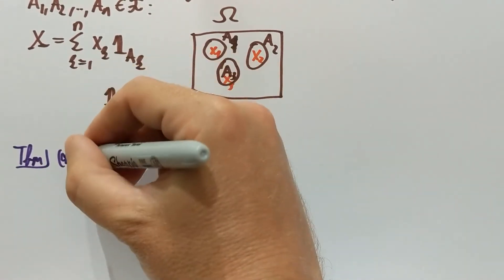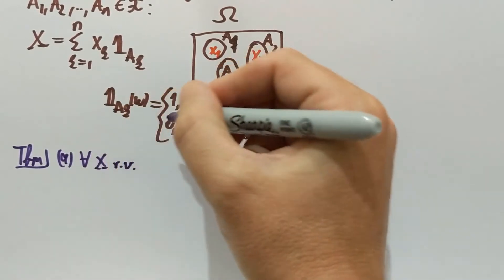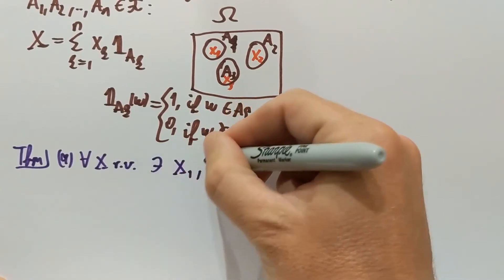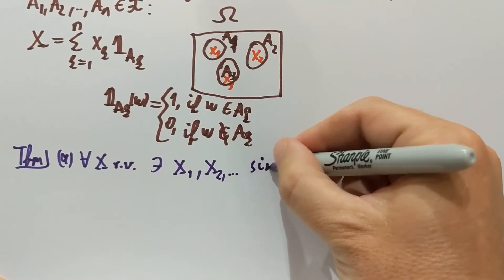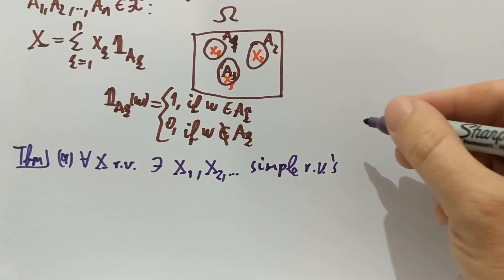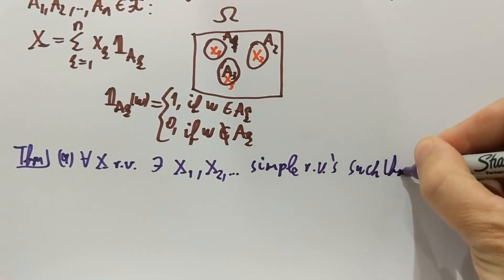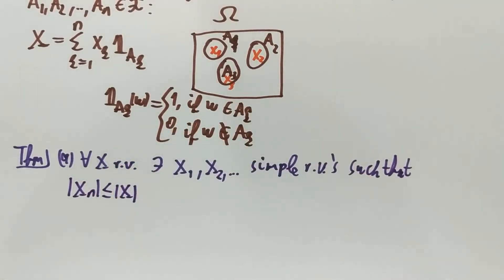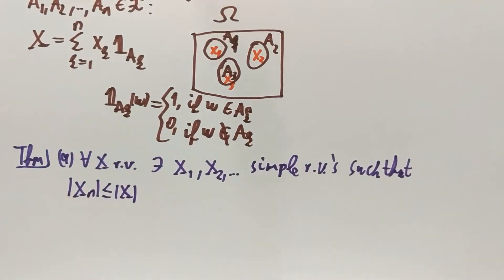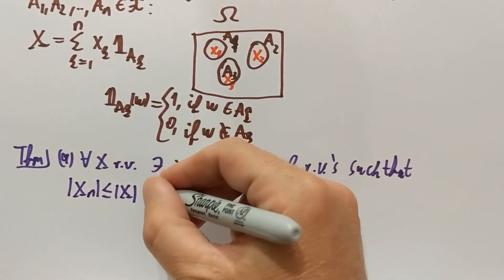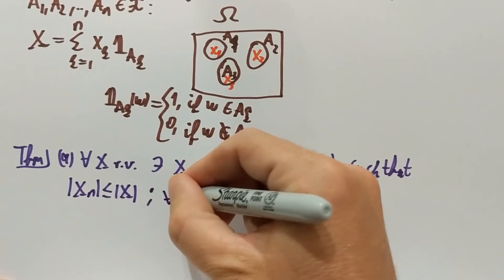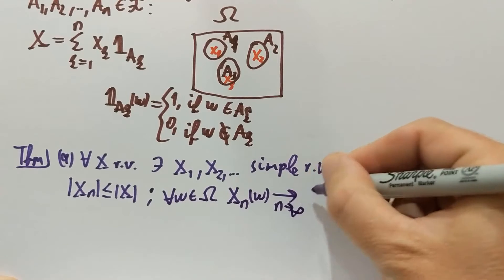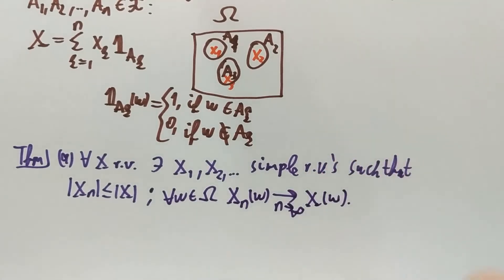The first one is that for every random variable x — which is not necessarily simple, so any random variable — there exists a sequence of simple random variables x1, x2, and so on, such that two things hold. First, the absolute value of xn is less than or equal to the absolute value of x for every omega. And second, we have pointwise convergence: for every omega in the sample space, the value of xn at that particular omega converges with n to the value of x at that same omega. So, pointwise convergence of these functions.